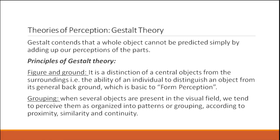There are theories of perception. For example, Gestalt theory contends that a whole object cannot be predicted simply by adding up perceptions of its parts. The principles of Gestalt theory include figure and ground — the distinction of a central object from its surroundings, which is basic to form perception. Grouping is another principle: when several objects are present in the visual field, we tend to perceive them as organized into patterns according to proximity, similarity, and continuity.